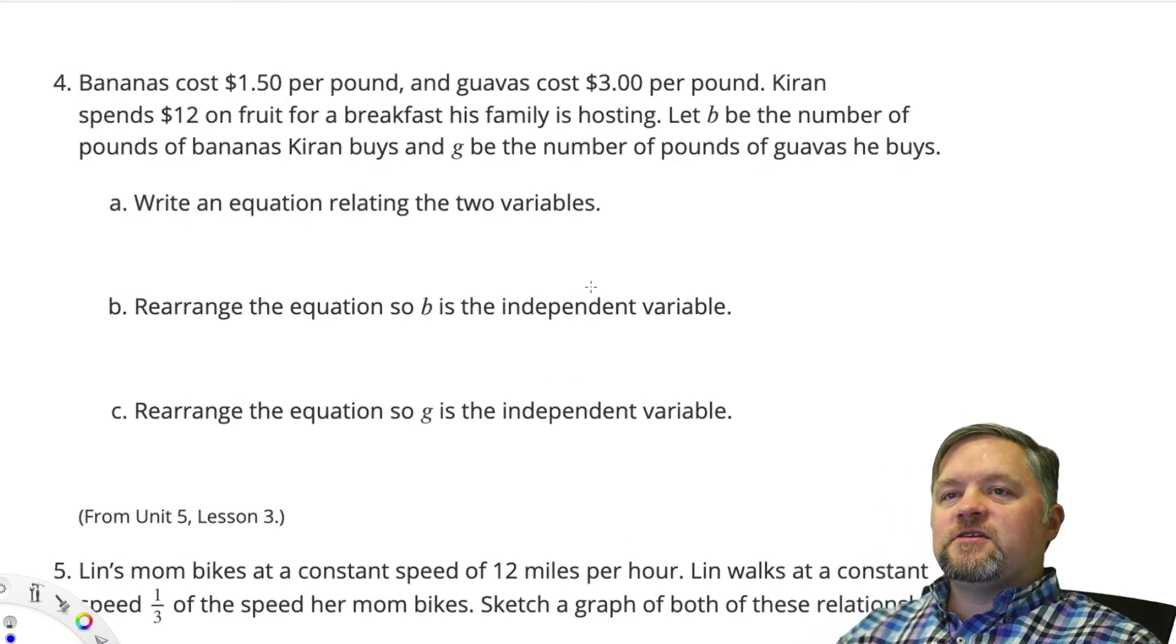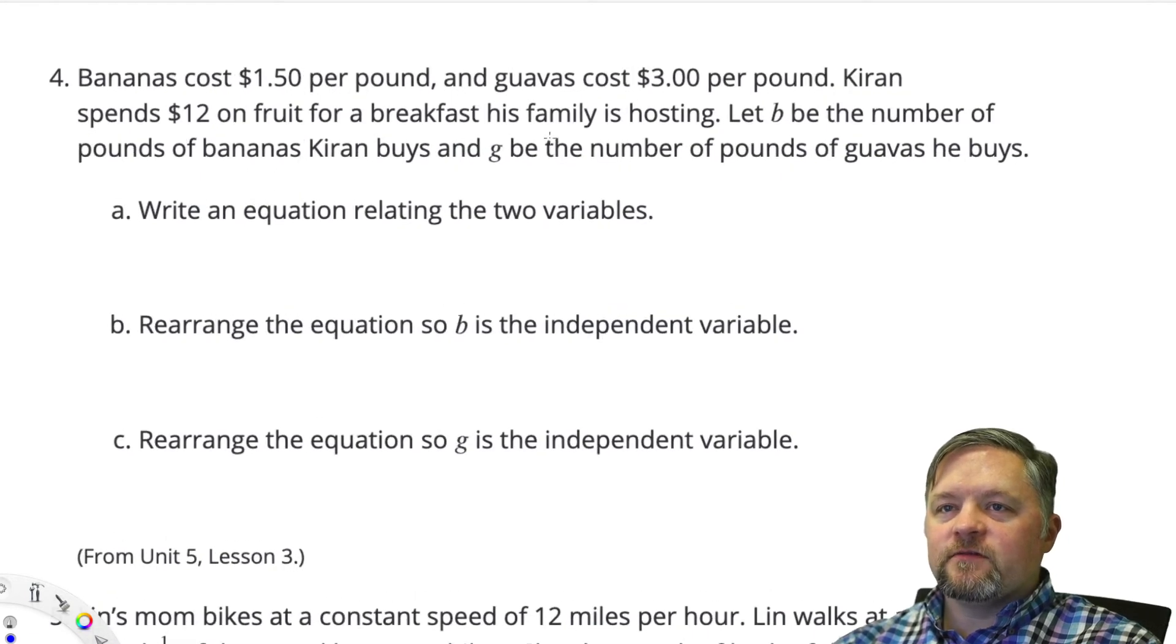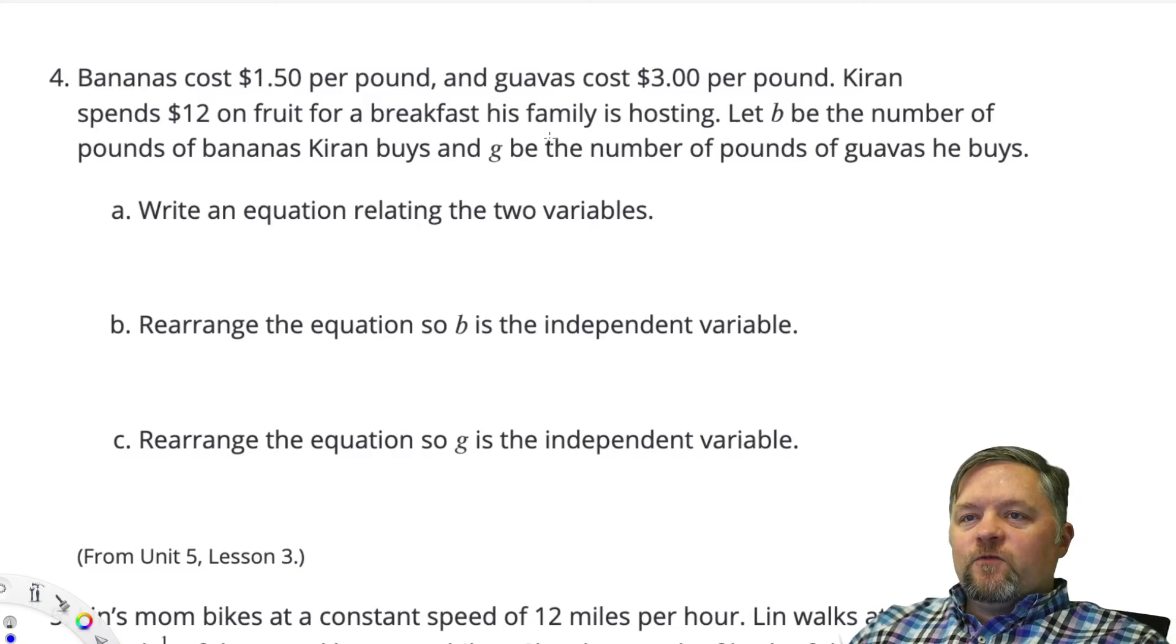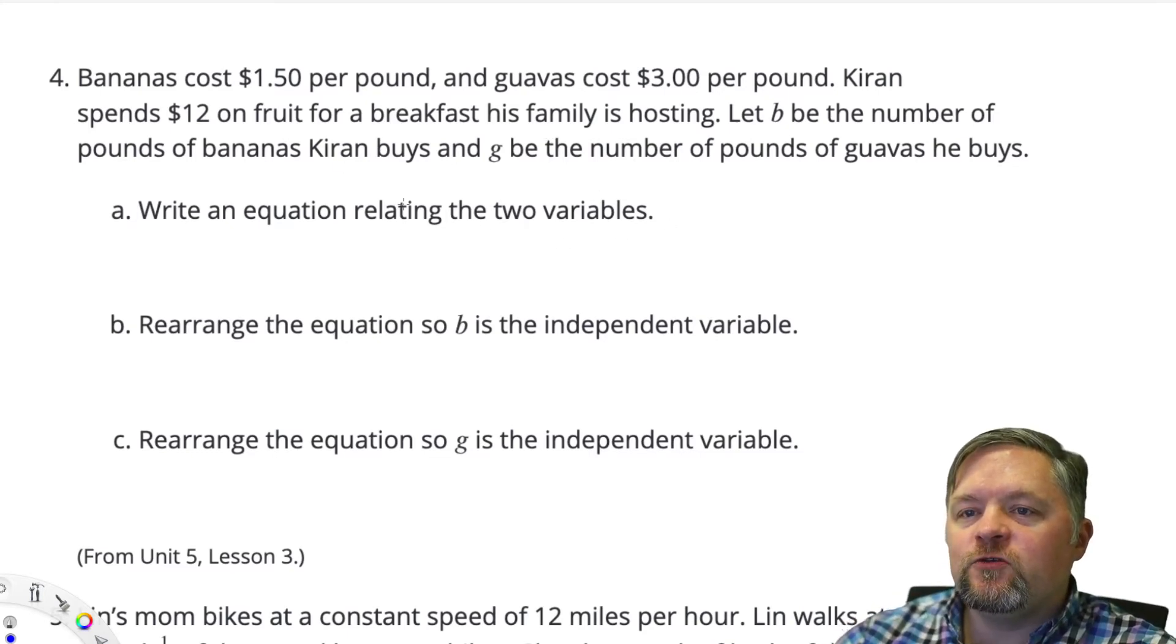Bananas cost $1.50 per pound and guavas cost $3 per pound. Kiran spends $12 on fruit for a breakfast his family is hosting. Let b be the number of pounds of bananas and g be the number of pounds of guavas he buys. Write an equation relating the two variables.